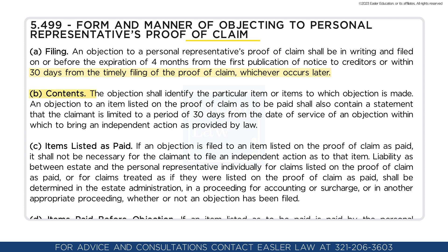Contents: The objection shall identify the particular item or items to which objection is made. An objection to an item listed on the proof of claim as to be paid shall also contain a statement that the claimant is limited to a period of 30 days from the date of the service of an objection within which to bring an independent action as provided by law.